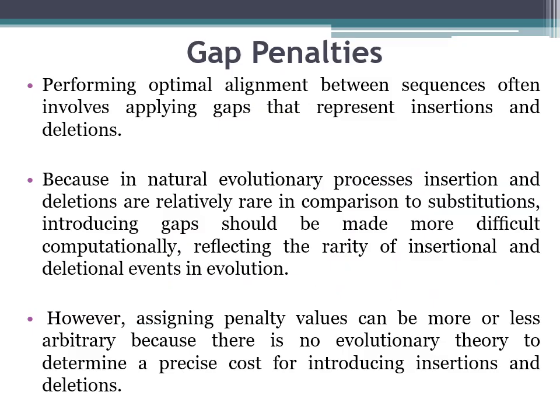Let us understand what gap penalties are. When we perform optimum sequence alignment, it often involves applying gaps that represent insertions and deletions. In natural evolutionary processes, insertions and deletions are relatively rare in comparison to substitution. The substitution mutation frequency is higher, so introducing a gap should be made more difficult computationally, reflecting the rarity of insertional and deletion events. However, assigning penalty values can be somewhat arbitrary because there is no precise evolutionary theory to determine the exact cost for insertions and deletions.